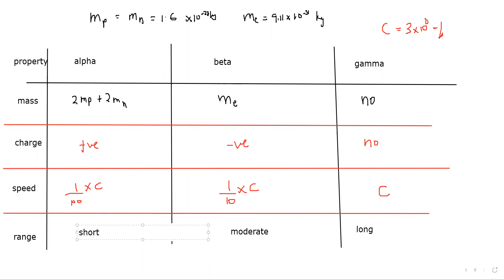More properties of these radiations will be discussed in the next session. This topic of atomic physics will take about three classes maximum. Radioactivity is almost complete; half-life will be done tomorrow and nuclear reactions — fission and fusion — next week. Any questions or doubts related to today's class?